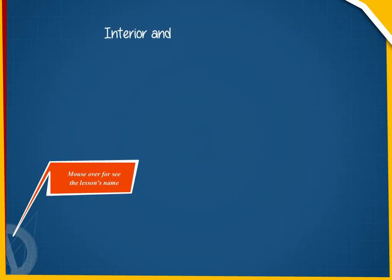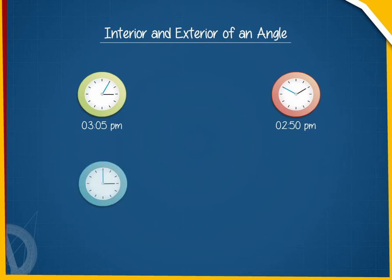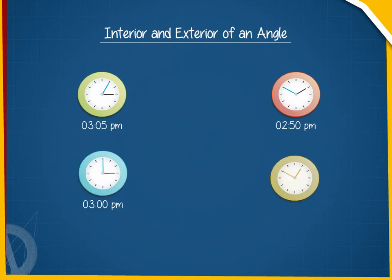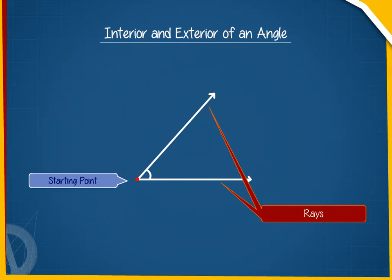Interior and exterior of an angle. The arms of a clock make different angles at different times of the day. An angle is a figure formed by two rays that emerge from the same starting point.